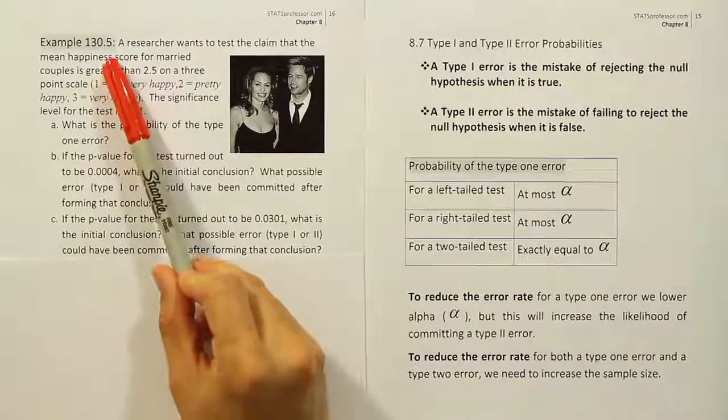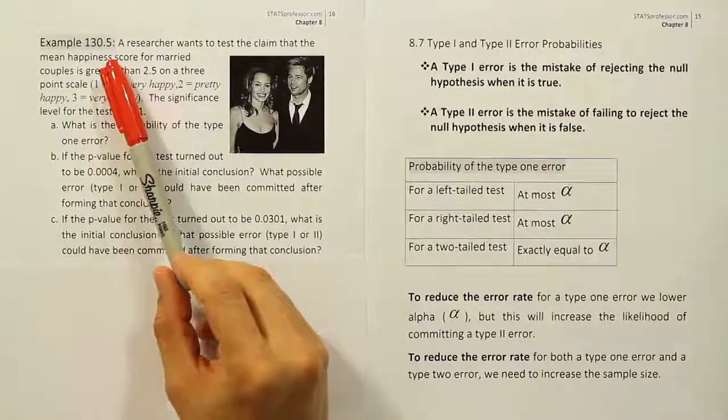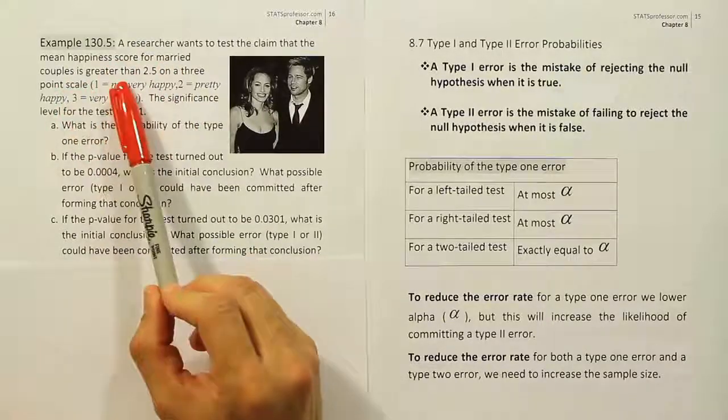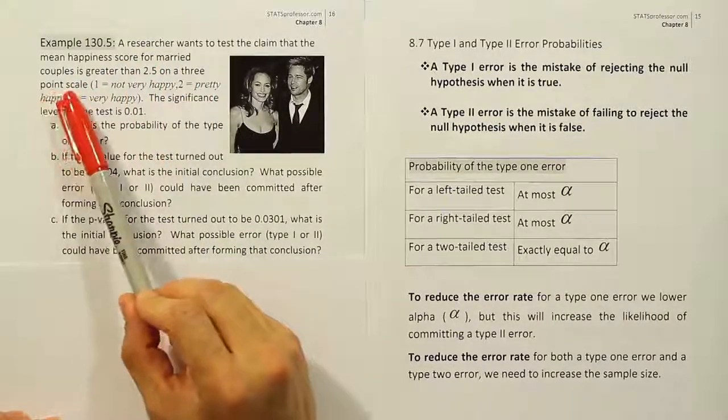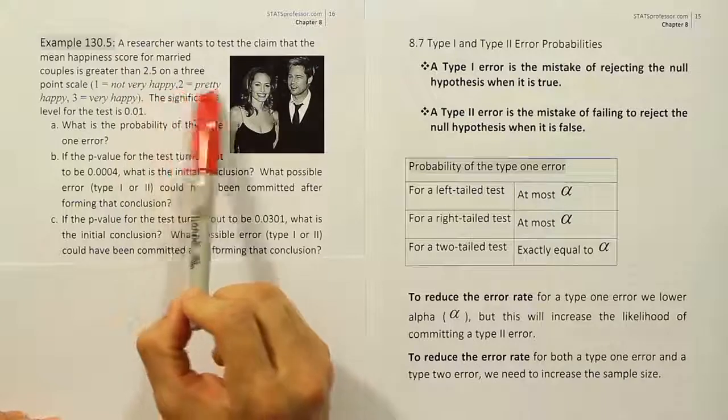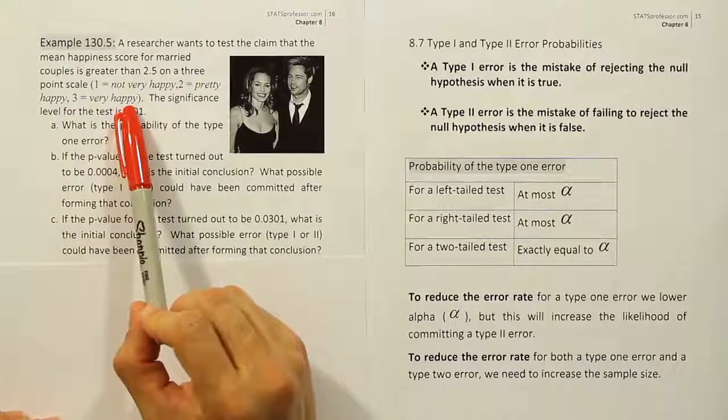Example 130.5. A researcher wants to test the claim that the mean happiness score for married couples is greater than 2.5 on a three-point scale, where 1 is not very happy, 2 is pretty happy, and 3 is very happy.